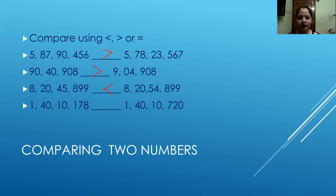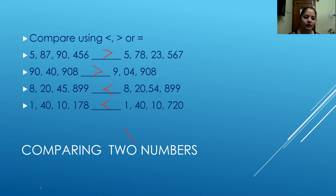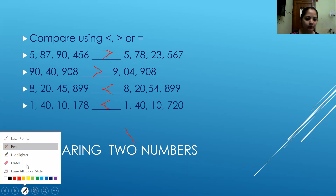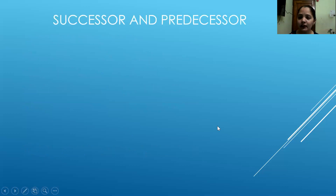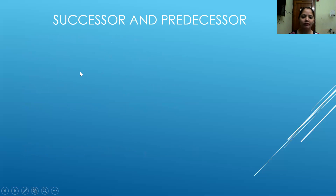For the last one, again the second number is the bigger number. Yes, you are correct — the second number is the bigger number. This is how we compare two numbers. Let's move on to our next topic, which is successor and predecessor. Successor means what comes next, and predecessor means what comes before.